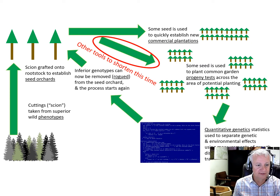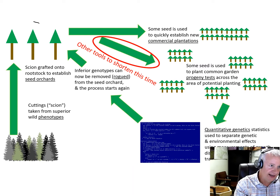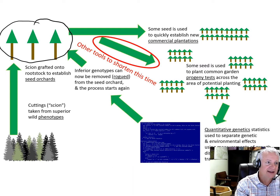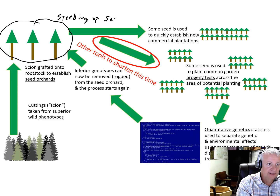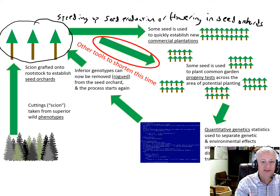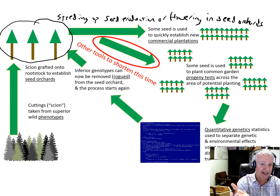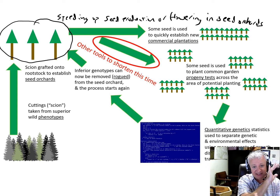There are other tools that have been explored to shorten this cycle time. One of the big efforts has been to try to shorten this phase in terms of speeding up seed production or flowering in seed orchards. This phase might take 10 or 15 years because the scion grafted onto the root stock takes many years to reach reproductive maturity and produce seed. There's been a lot of effort to figure out how to speed up the production of seed in the seed orchard.